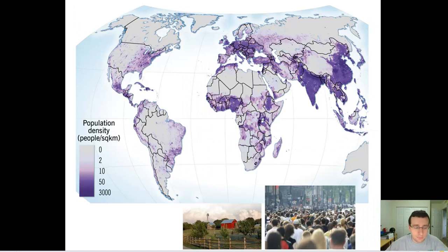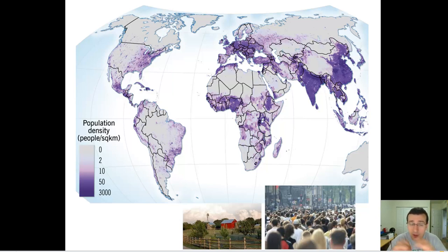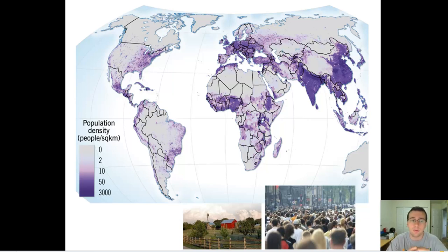This leads us to a concept called population density — the idea that sometimes populations are going to be very packed together and sometimes they're going to be more sparse. Look here, for example, at this graph of the human population around the Earth, showing the density or how packed together people are living in certain areas.